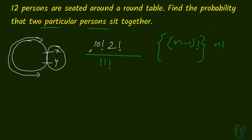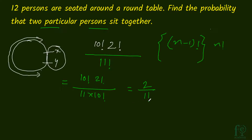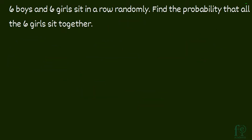So the probability will be equal to 10 factorial into 2 factorial divided by 11 factorial, which gives us 10 factorial into 2 factorial divided by 11 into 10 factorial. This simplifies to 2 divided by 11. So 2 by 11 is our required probability.